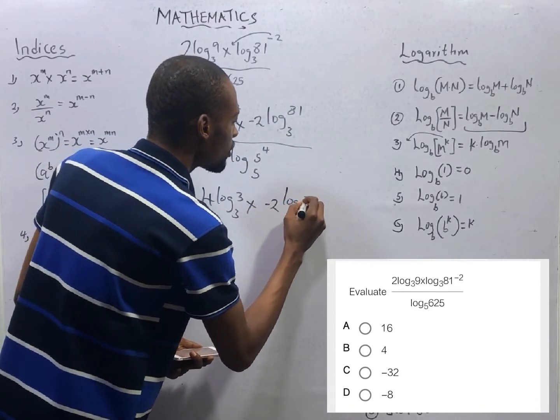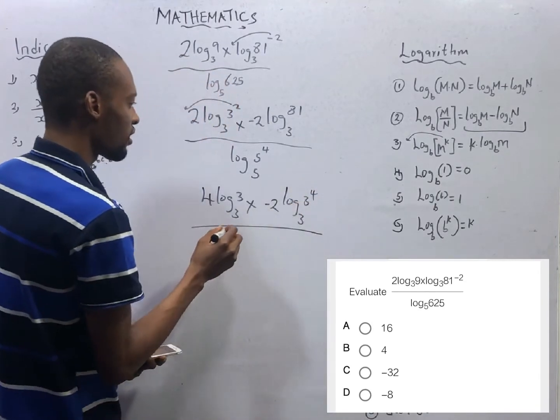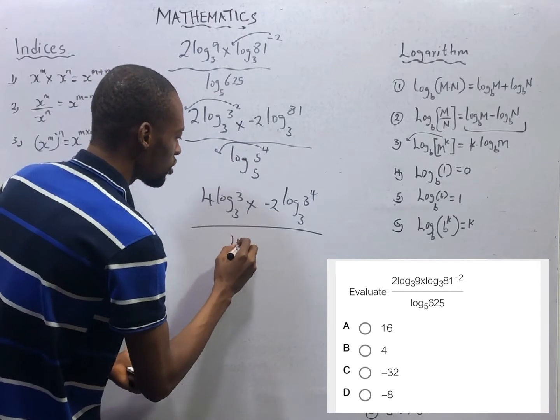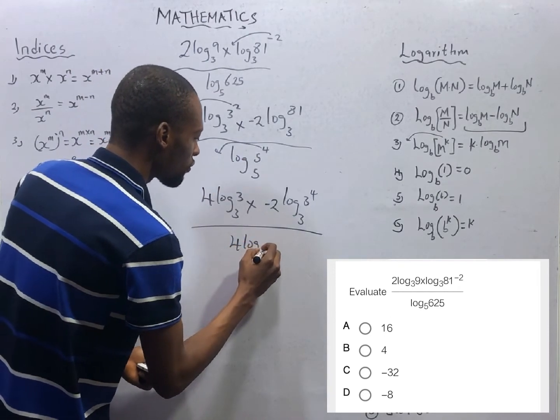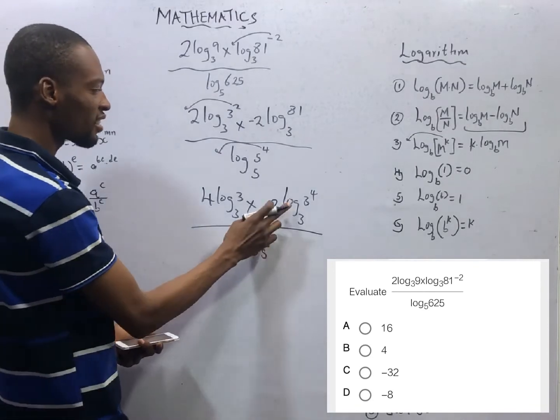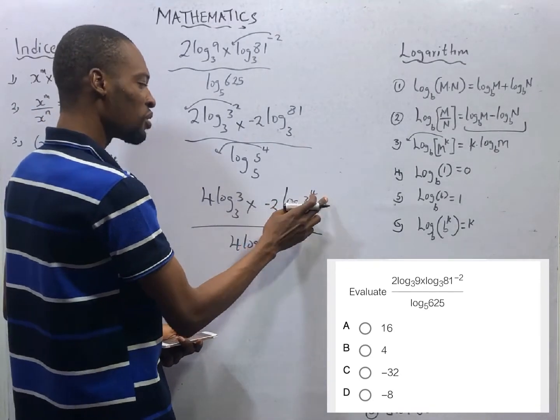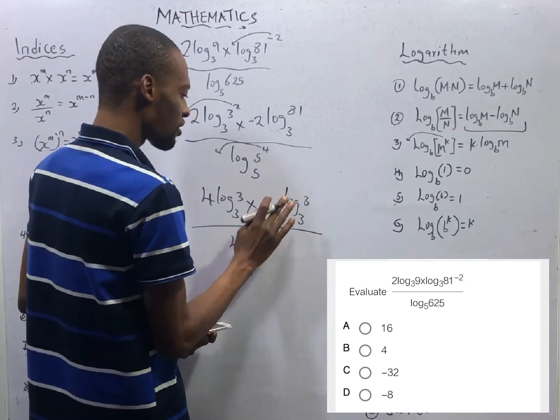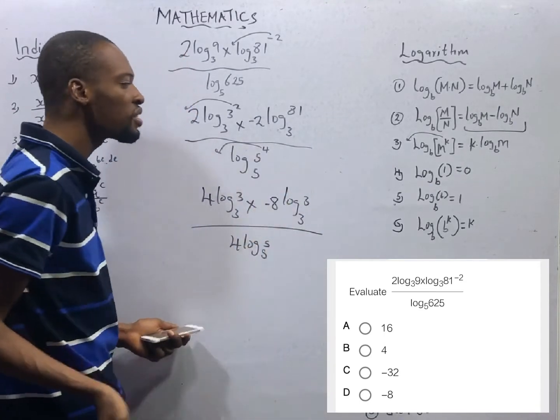Log 3, 3 raised to power of 4 over. Here, bring down the power. So 4 log 5 with base 5. From here, when you bring out the power here, you have minus 2 times 4. 2 times 4 is 8. So this is minus 8. Food is ready.